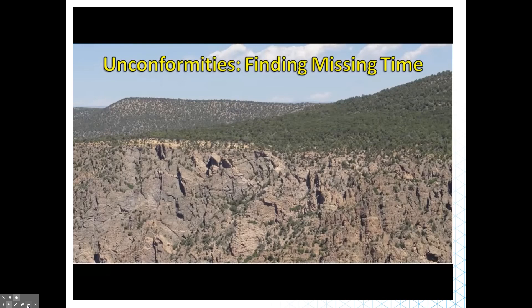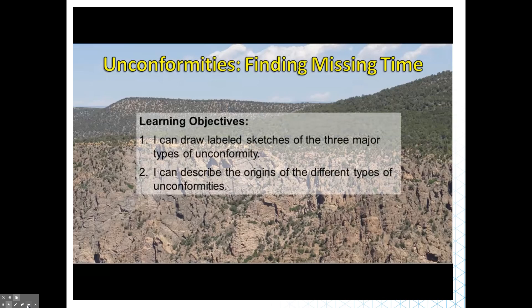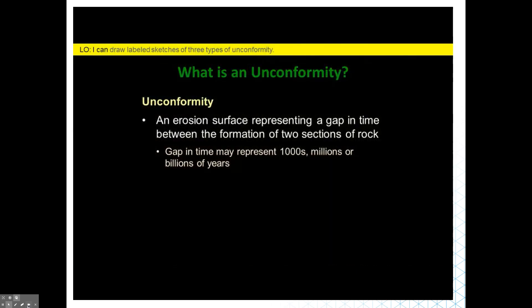Imagine reading a great book but someone had removed a random series of pages. Without those missing pages you might not figure out relationships between characters. Geologists try to decipher Earth's history as told in the rocks, but often parts are missing — rock layers removed by erosion or never formed in the first place. An unconformity is an erosion surface representing a gap in time between the formation of two sections of rock.